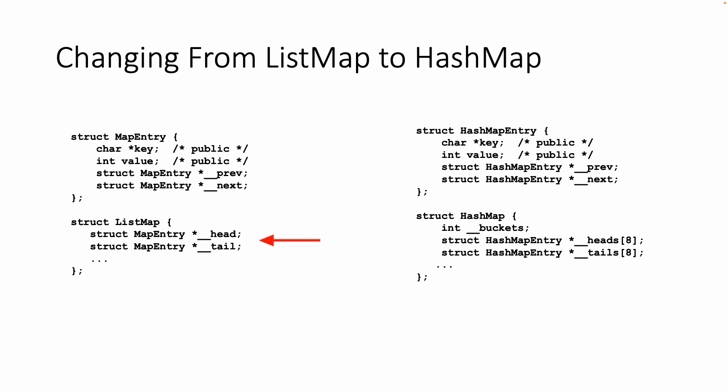Then the list map itself has got a head and a tail and maybe a count and a few other things, and then the methods, etc., because we've done encapsulation. So the hash map entry, if you look at it, it's pretty much identical, and that's because the entries in a hash map are just part of a linked list.